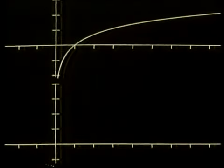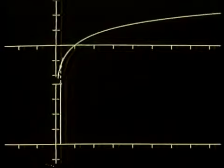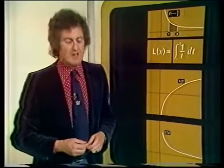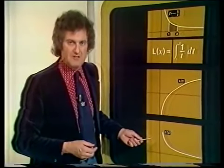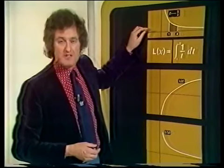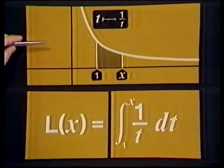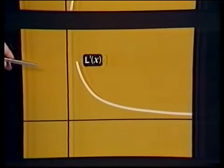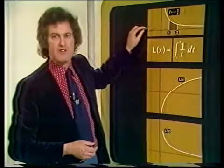We're also going to be interested in the calculus — the derived function of L. What does that look like? We're starting with L of x, taking the slope of the tangent and plotting that. The derived function looks exactly like the function we started with, and so it ought. We started with t maps to 1 over t. From the fundamental theorem of calculus, we know that L of x, the area function, is a primitive of 1 upon t. So when we form its derived function, L prime of x, we must get back to the function we started with — the 1 over function.